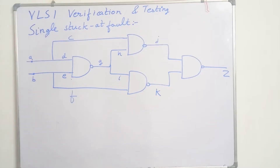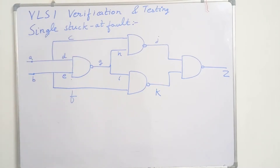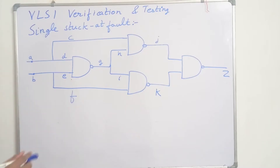We use various fault models to detect the fault. The most common fault model is the single stuck-at fault. In the single stuck-at fault, we have basically three assumptions: we assume that only a single line is faulty, and the faulty line is either stuck at 0 or 1. Also, the fault can be at the input or output of a gate.